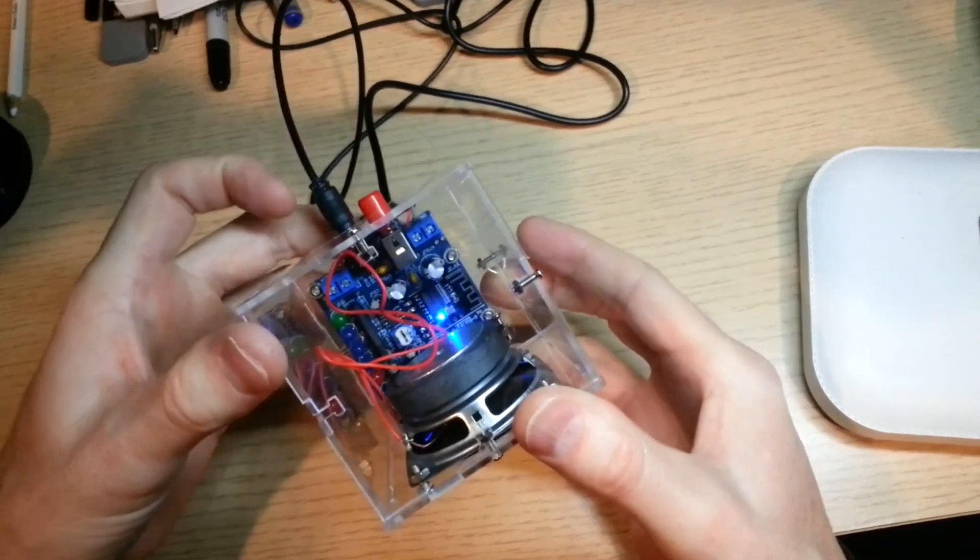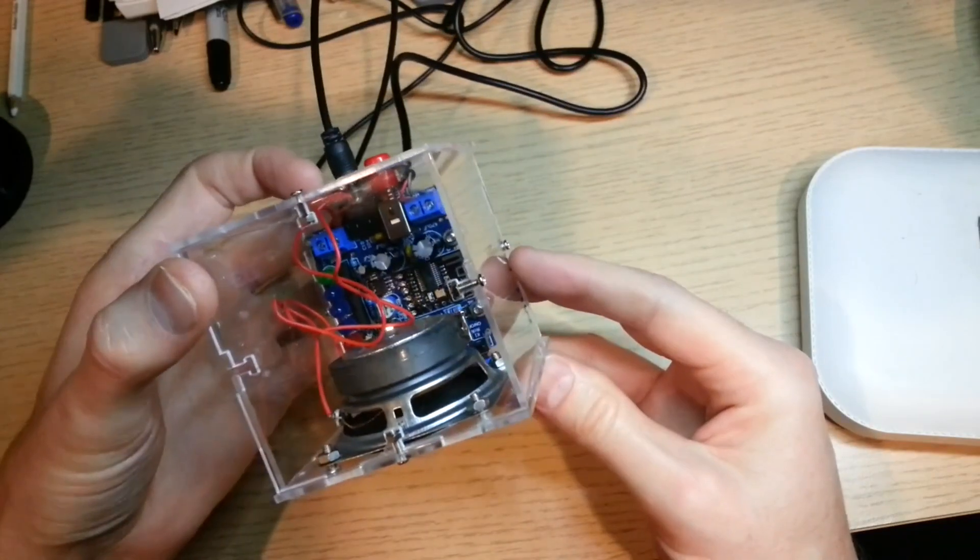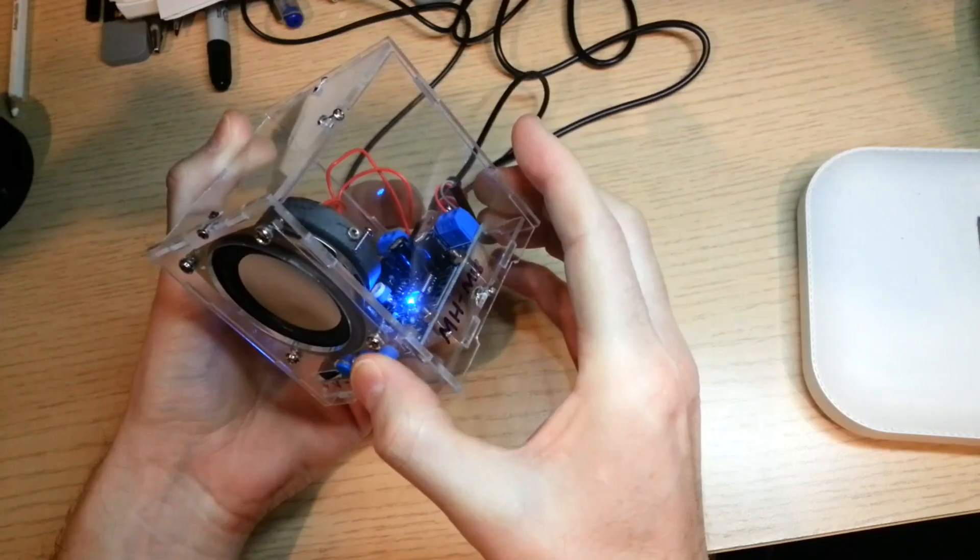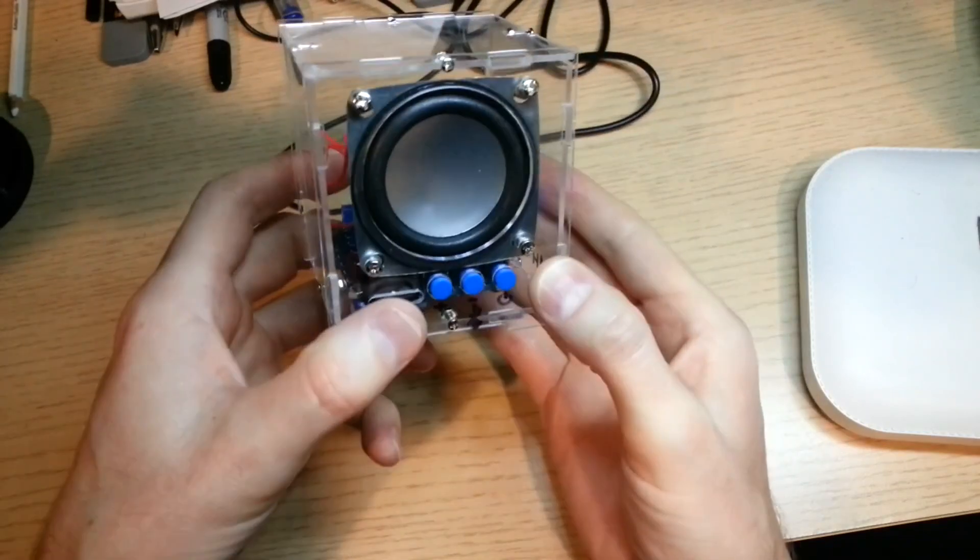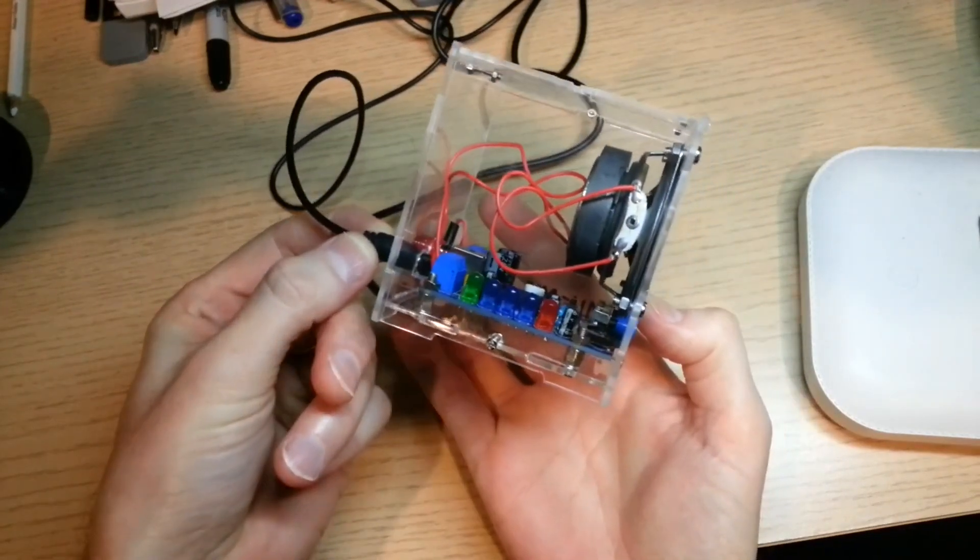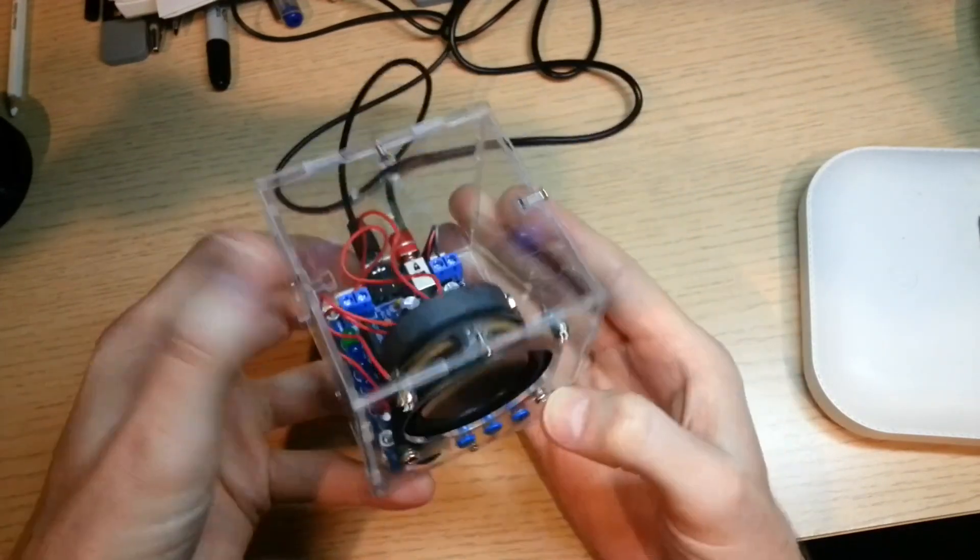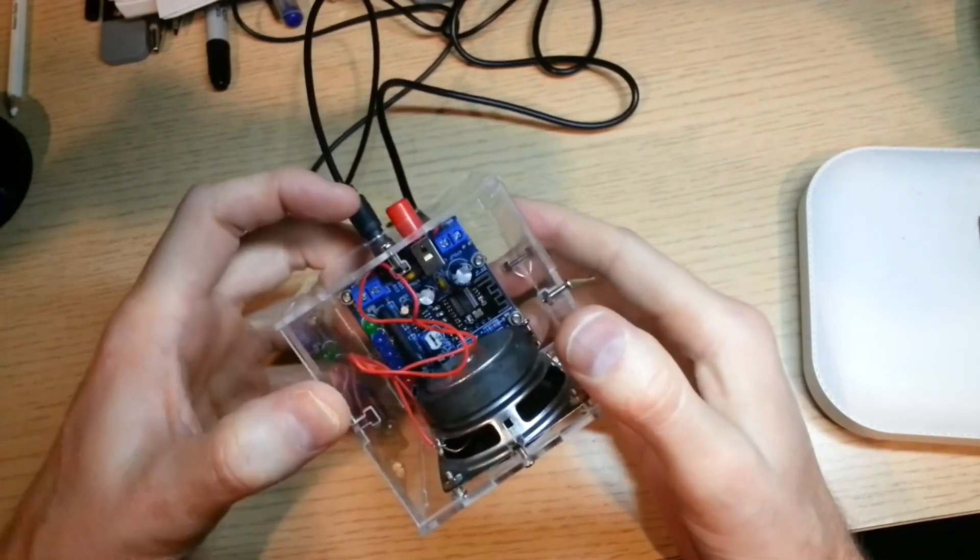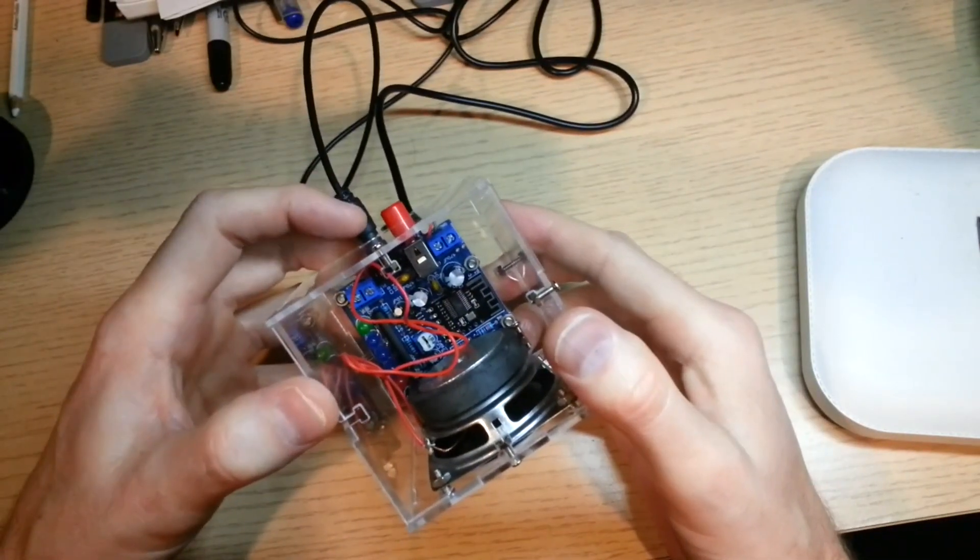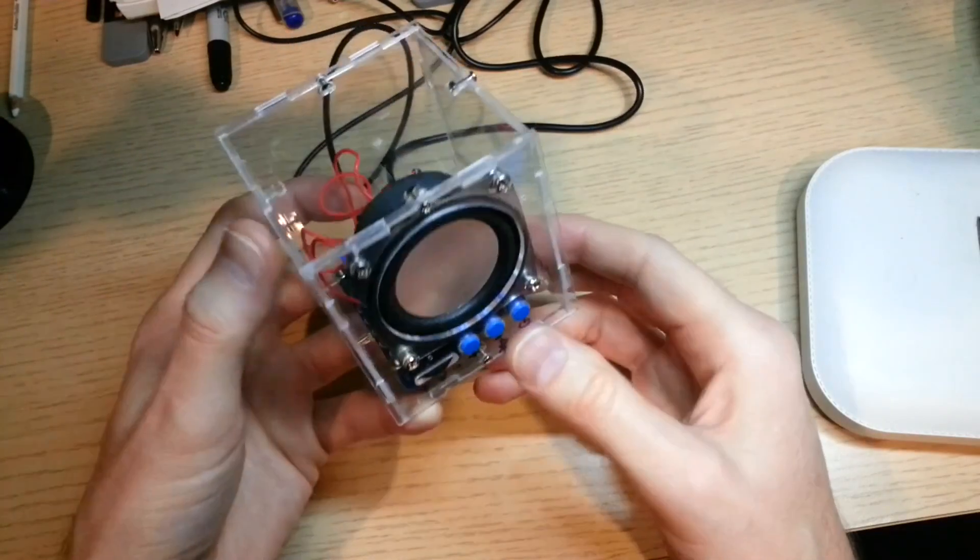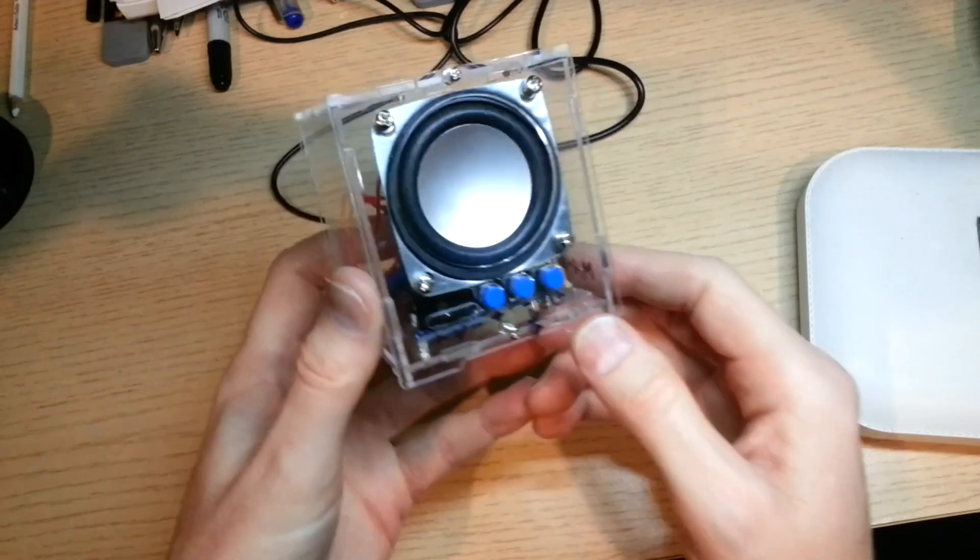When you turn it on, the Bluetooth module turns on and blinks, but you can turn off the Bluetooth module by pressing and holding the power button at the front here. Now that doesn't turn off the 3.5 millimeter audio at the back here. You can actually have audio coming from the 3.5 millimeter as well as the Bluetooth module at the same time coming through the speaker.